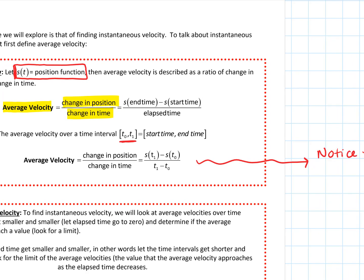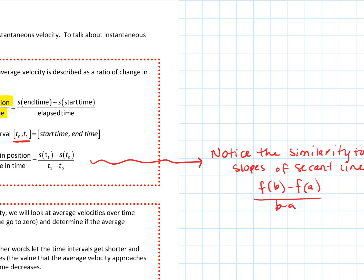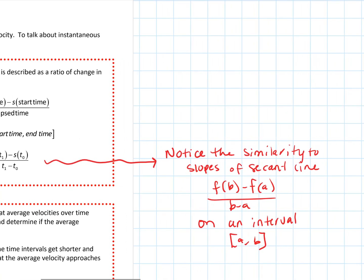Notice the similarity to slopes — slopes in general, but specifically slopes of secant lines from our first example. We're literally taking that slope formula: F of B minus F of A over B minus A on an interval from A to B. We're applying that same calculation in a very specific context here — velocity, speed, travel, distance. Notice how similar this is to the calculations we did for slopes of tangent lines by looking at slopes of secant lines.